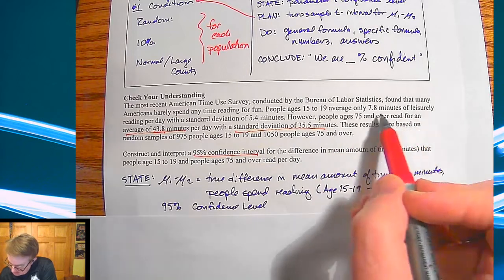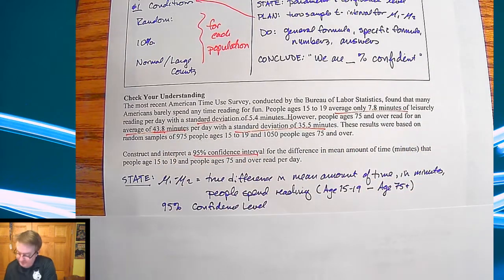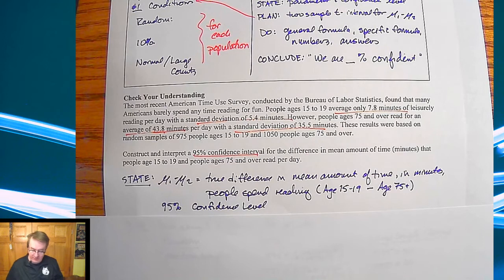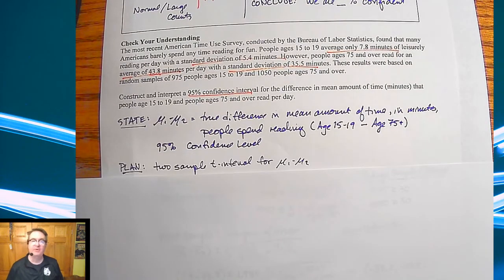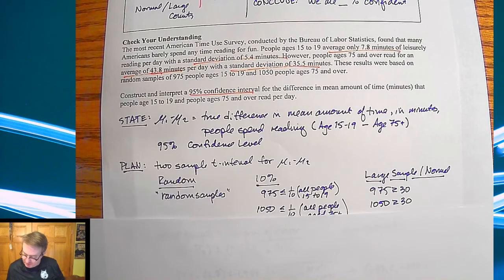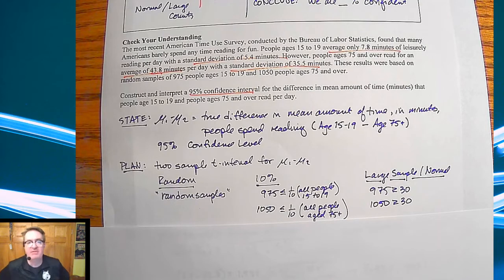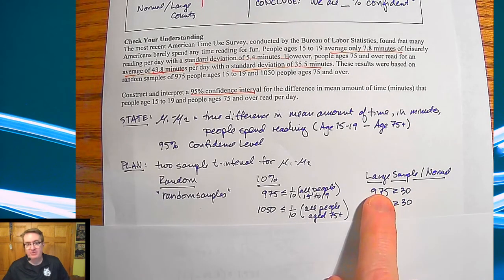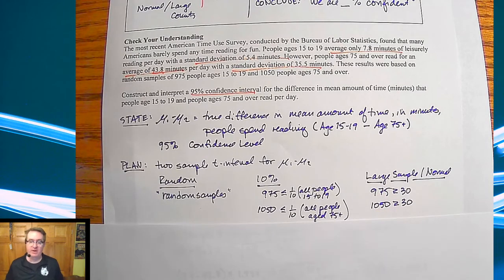Plan: we're going to do a two sample t interval for difference of means. Let's move this over here. In terms of your conditions, both say that they're random samples. 10%: 975 is definitely less than 10% of all people who are aged 15 to 19, and likewise 1050 is less than 10% of all people who are age 75 or older. For normal, we got large samples here, so 975 and 1050 are both much bigger than 30.